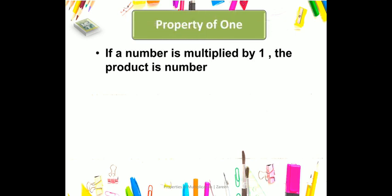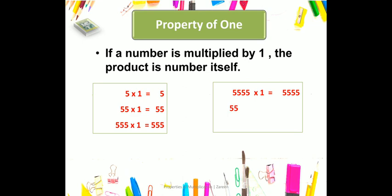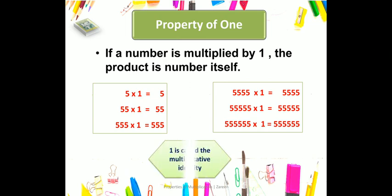Now, property of one states that if a number is multiplied by 1, the product is the number itself. Here you can see that in the case of multiplication, 1 is called the multiplicative identity.